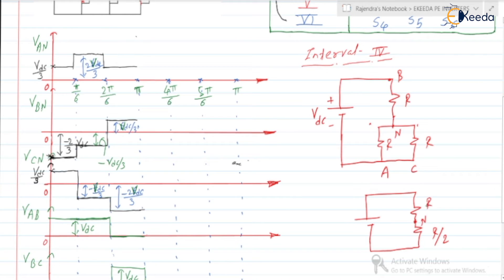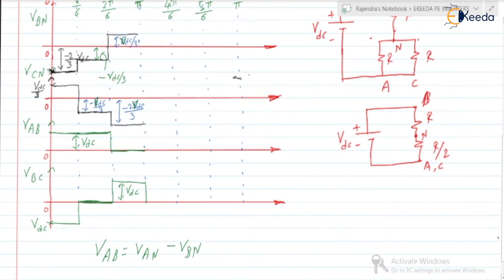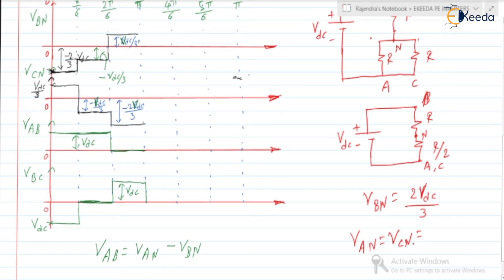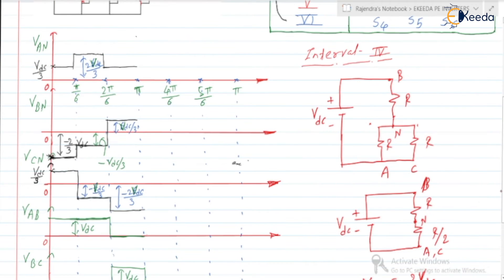From this circuit, we can write VBN equals R over (3R/2) times VDC, which gives us 2VDC/3. VDC is the input voltage. And VAN equals VCN, which will be negative, equal to minus VDC/3.